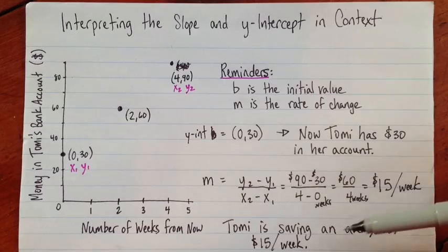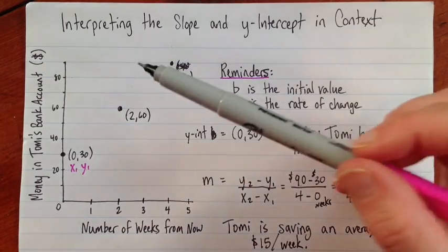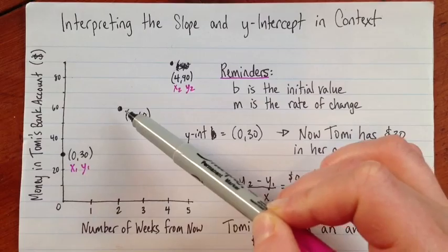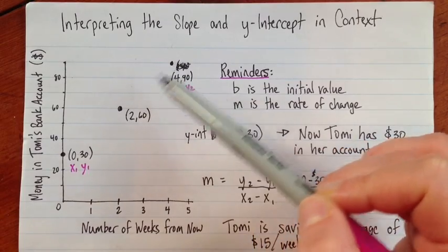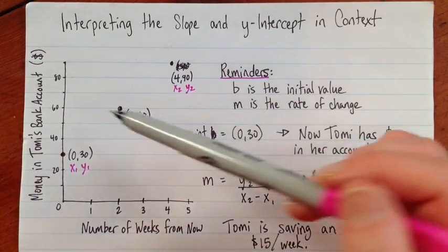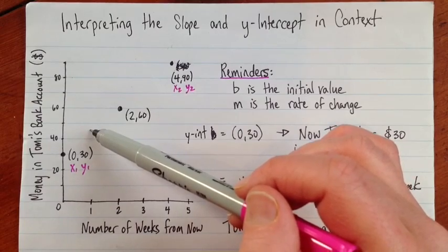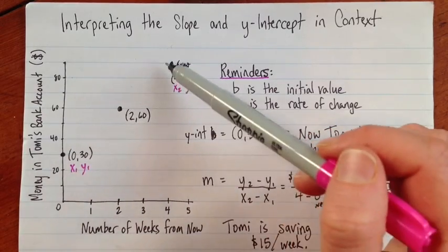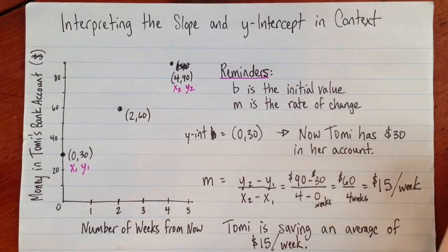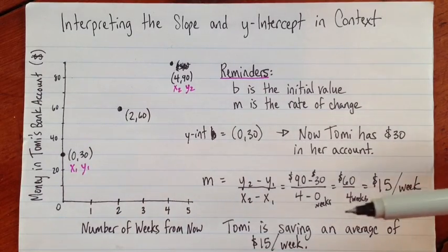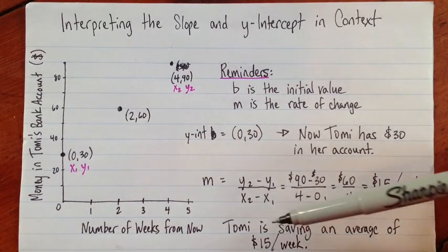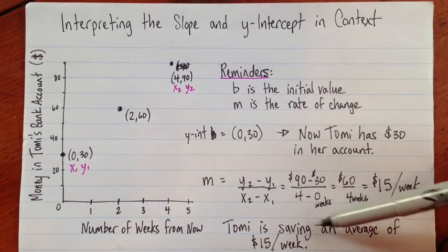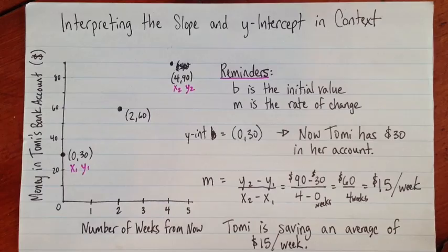Now the only reason it's important to say an average of here, is because it actually looks like maybe Tommy's making deposits twice every two weeks. Maybe she's putting in 30 dollars every two weeks. Because we don't have these points here. So it's possible we just didn't know them. But it's possible that she actually just goes to the bank every two weeks, or makes a deposit online every two weeks. Maybe if she gets paid from a part time job. So instead of saying that she actually saves 15 dollars a week, that might or may not be true, but on average, it's 15 dollars a week.